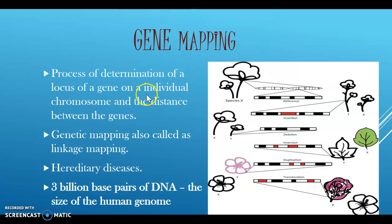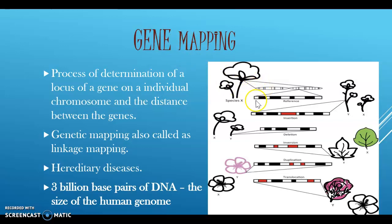Let us know what we mean by gene mapping. A map is a graphic representation which provides information about the location of sites and the spacing between them. Both gene mapping and physical mapping provide the necessary information about the specific types of genes present in a segment of DNA and the distance between two genes. The genetic map shows the order of sites derived from meiotic recombinant frequencies, and the distance between sites is measured in centimorgans.